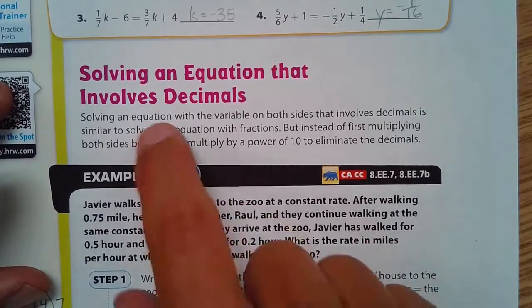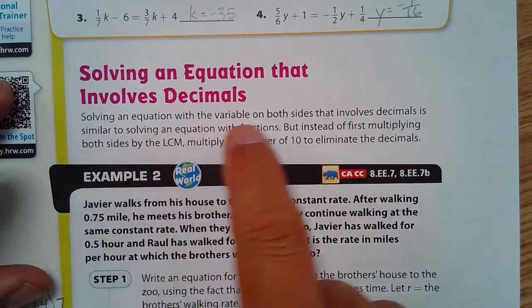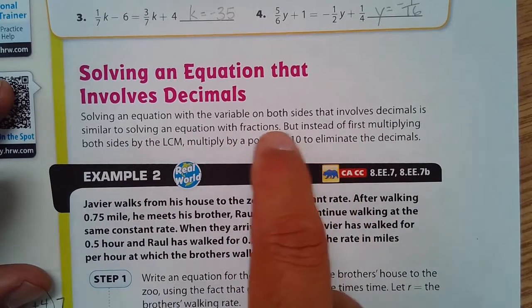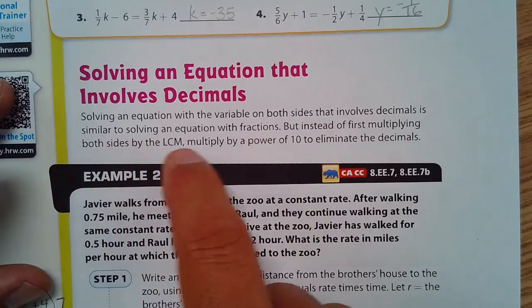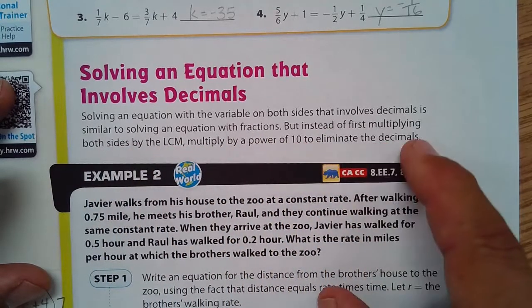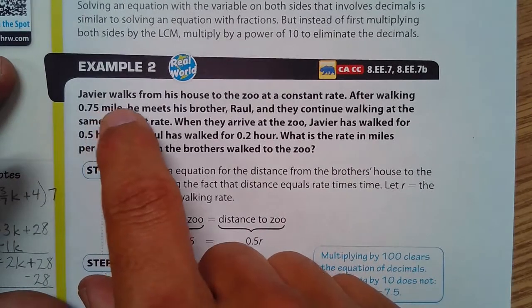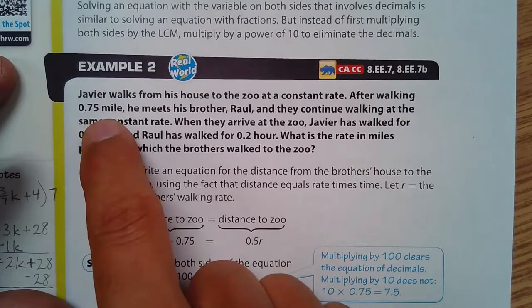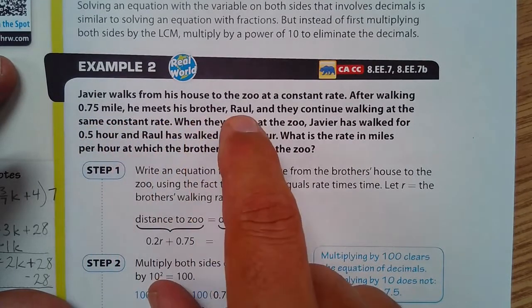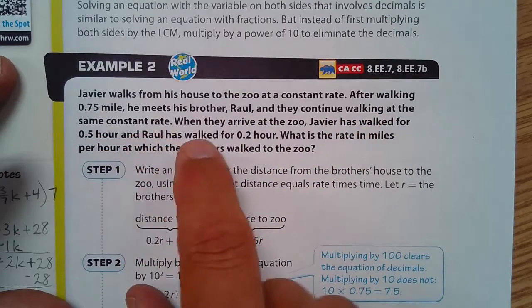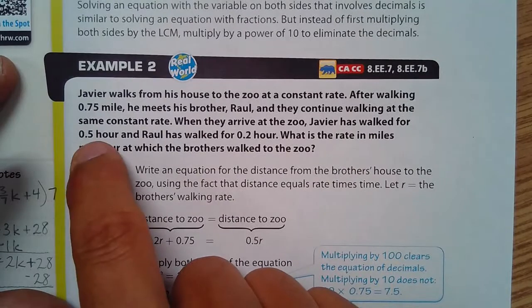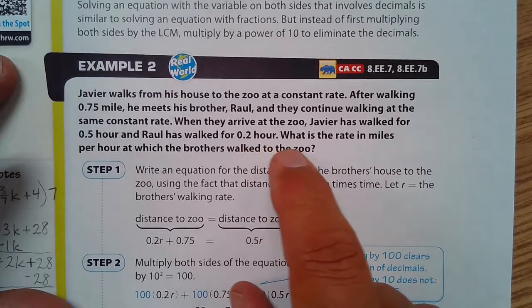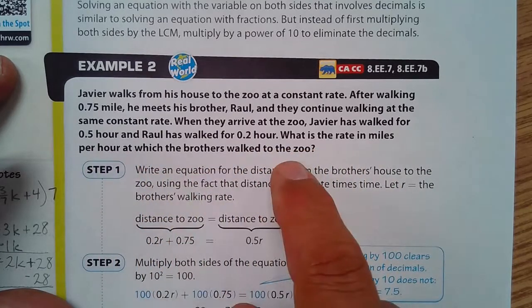Solving an equation that involves decimals. Solving an equation on variables on both sides that involves decimals is similar to solving an equation with fractions. But instead of first multiplying both sides by the LCM, you're going to multiply by a power of 10 to eliminate the decimals. So, Javier walks from his house to the zoo at a constant rate. After walking 0.75 of a mile, he meets his brother Raul, and they continue walking at the same constant rate. When they arrive at the zoo, Javier has walked for 0.5 of an hour, and Raul has walked 0.2 of an hour.